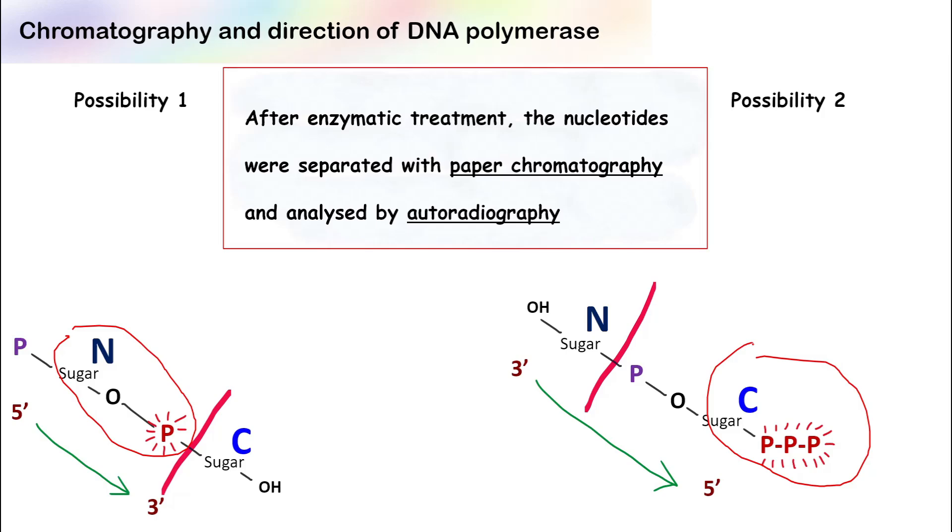So when Arthur Kornberg did this experiment, he found that the labeled phosphate was getting transferred to the adjacent nucleotide, and so the direction of DNA polymerase was from five prime to three prime. As you can see, just by using simple techniques like ion exchange chromatography, paper chromatography, and autoradiography, it was possible to find the direction of DNA polymerase.